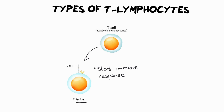Hence the name helper T — it helps determine whether your body is under attack. On the surface of the helper T is a little protein that sticks out on the outside, and we call that an antigen. An antigen is a protein receptor — it's like a little flag that determines whether or not that cell belongs there. The helper T will have a whole bunch of those antigens or receptors on the outside of itself.